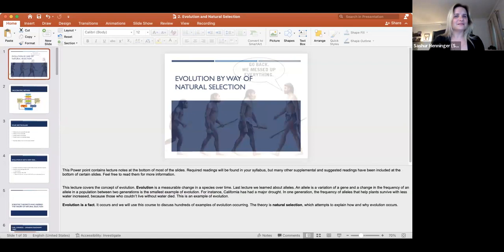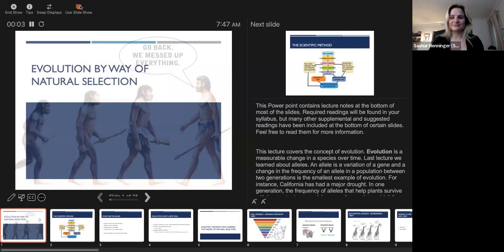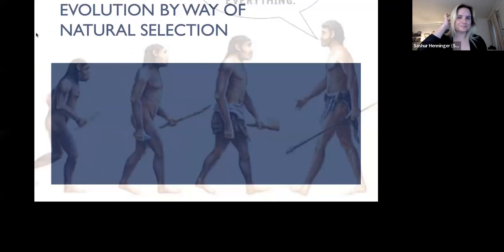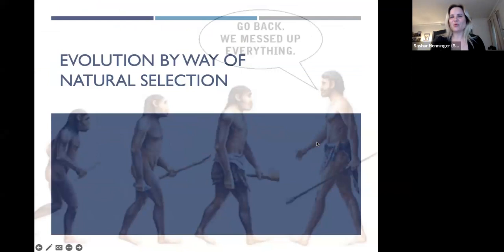With that being said, let's jump into part one of our evolution by way of natural selection. This classic image, evolution by way of natural selection where you have the ape walking towards human. This is a funny meme I'll try to incorporate inappropriate jokes throughout the semester to make you laugh. This is oftentimes controversial among the anthropological community because it's really not as simple as this, but we're going to explore that over the course of the semester.